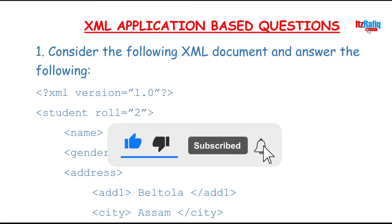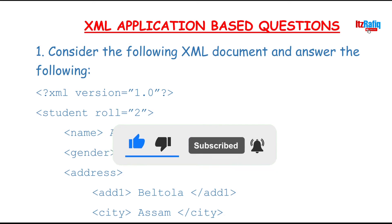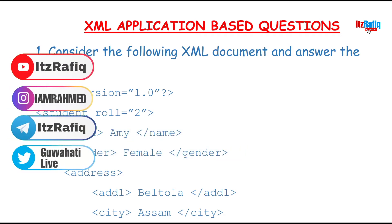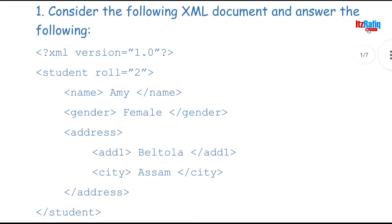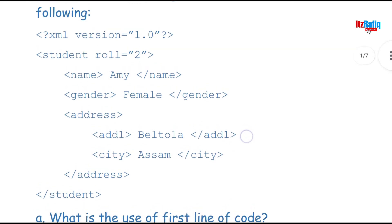Welcome to this video. Today I am going to discuss how we can solve application-based questions on XML. Here you can see one XML code. The first line is a processing instruction: XML version 1.0. The processing instruction starts with an angle bracket followed by a question mark, and ends with a question mark and angle bracket.